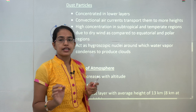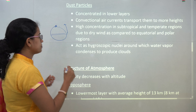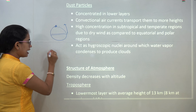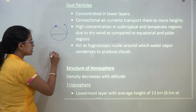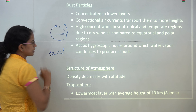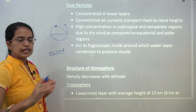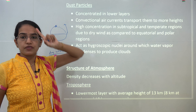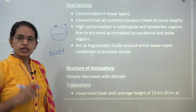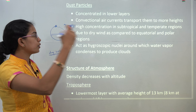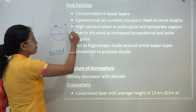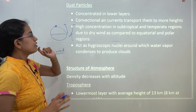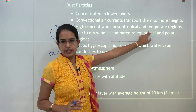Dust particles are present in high amounts where there is dry wind. The subtropical and temperate areas have a very high percentage of dust particles compared to the equatorial or polar areas. As a result, the maximum dust present in the atmosphere is found in the subtropical and temperate areas.